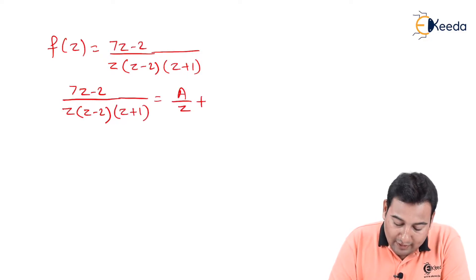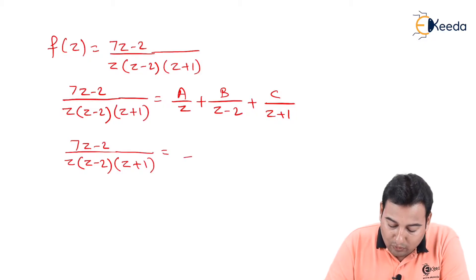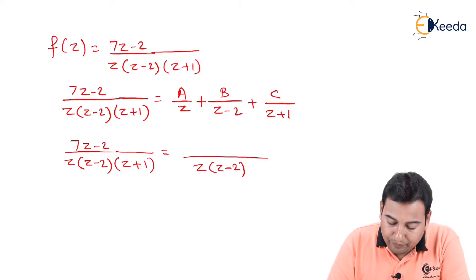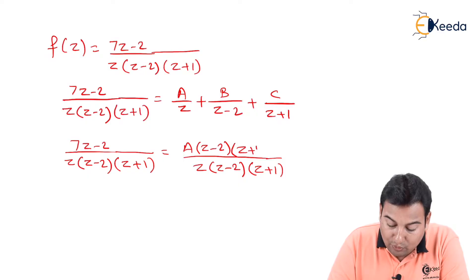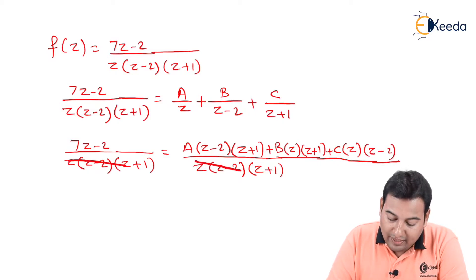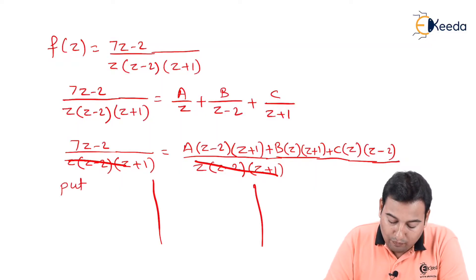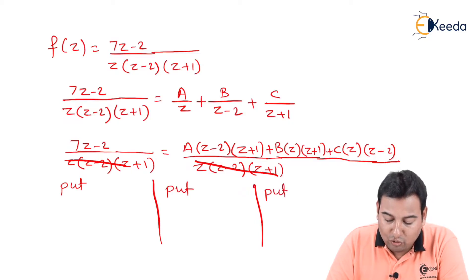The first factor gives A upon z, the second gives B upon (z minus 2), and the third gives C upon (z plus 1). Taking LCM, (7z minus 2) upon z(z minus 2)(z plus 1) equals the numerator A(z minus 2)(z plus 1) plus B·z(z plus 1) plus C·z(z minus 2), all over the same denominator. The denominator cancels. Now we use the put-put-put technique. We need 3 values, so we need to make 3 substitutions.